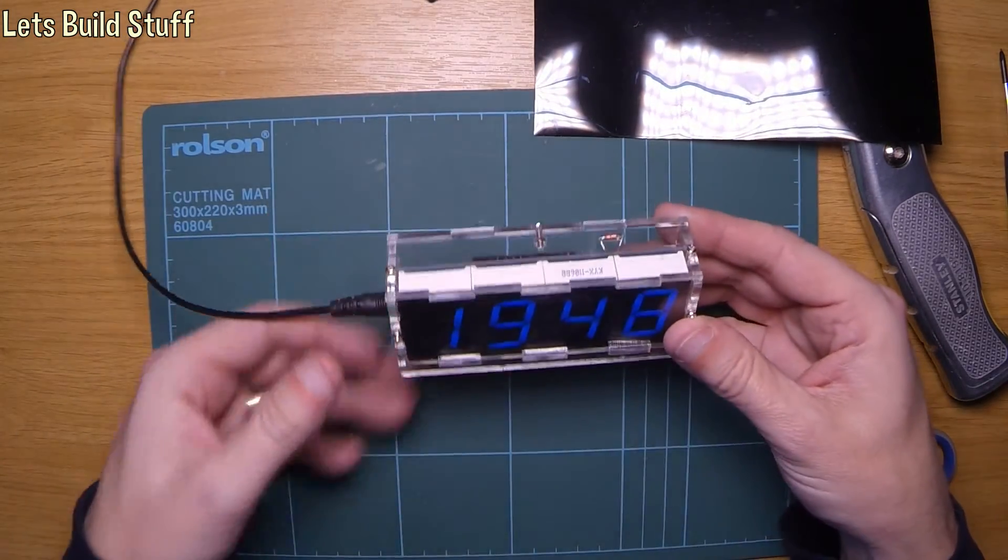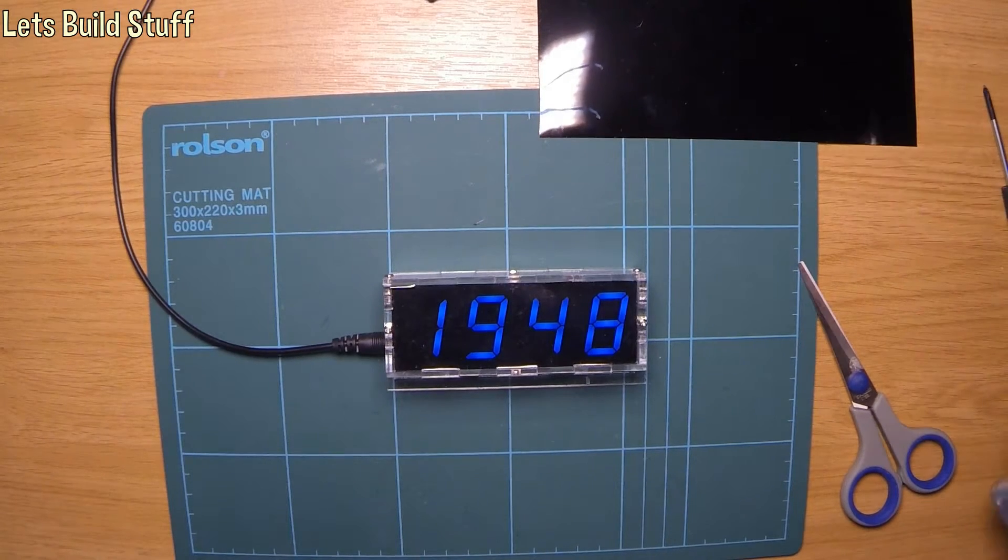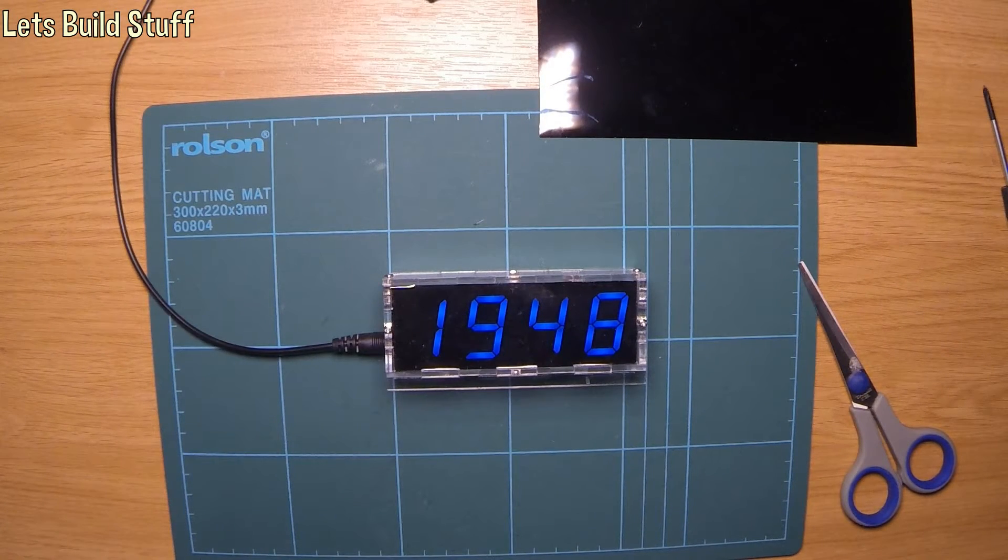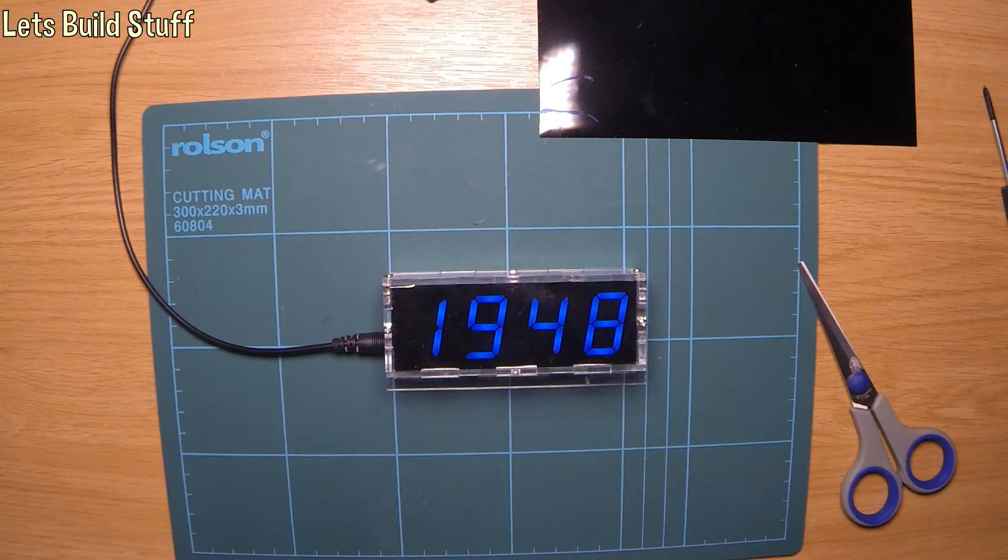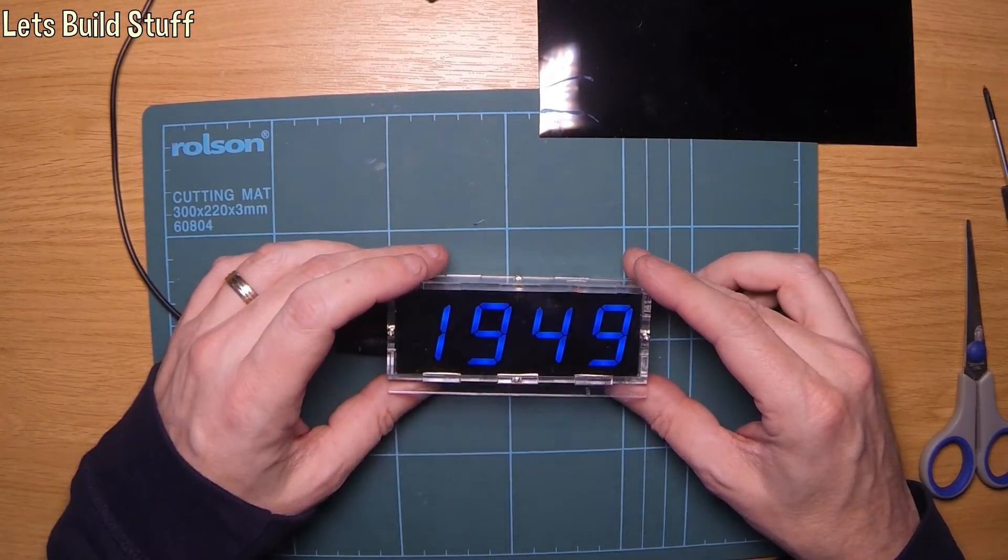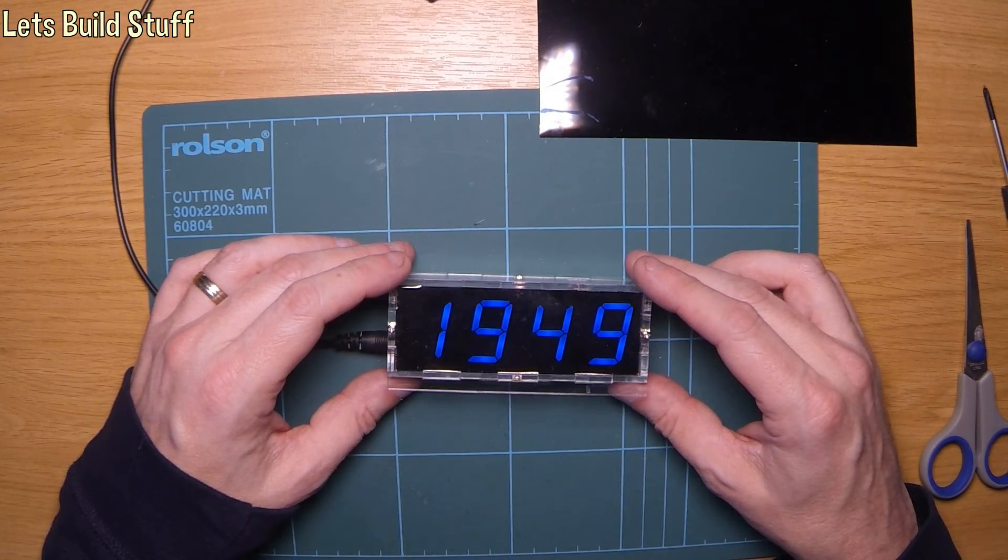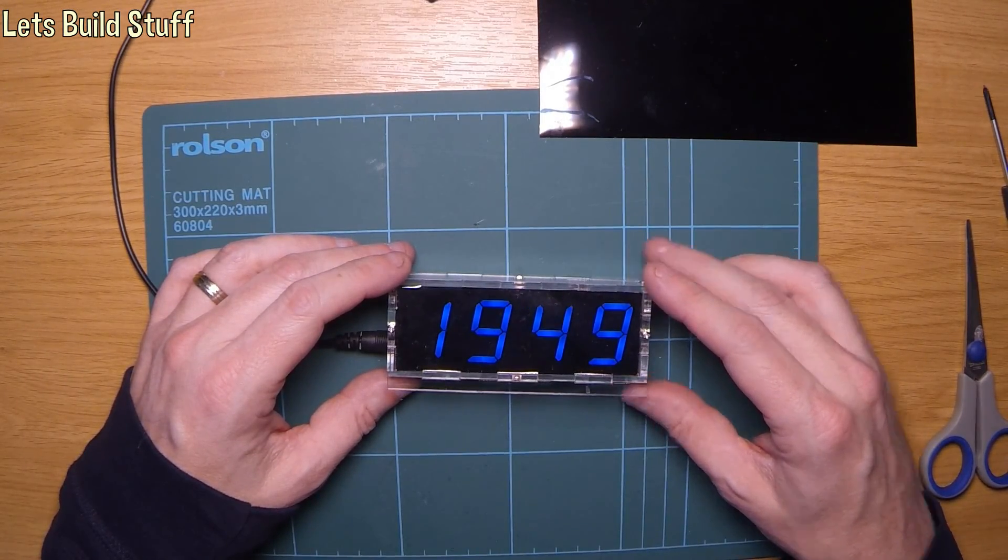But there we go, that looks quite a bit nicer actually. So if you do have one of these clocks from Banggood and find it too bright during nighttime, you can get some of this film from eBay and put a little bit behind the screen to make it quite a bit darker. If you like this video, please like and subscribe, and I'll see you next time.